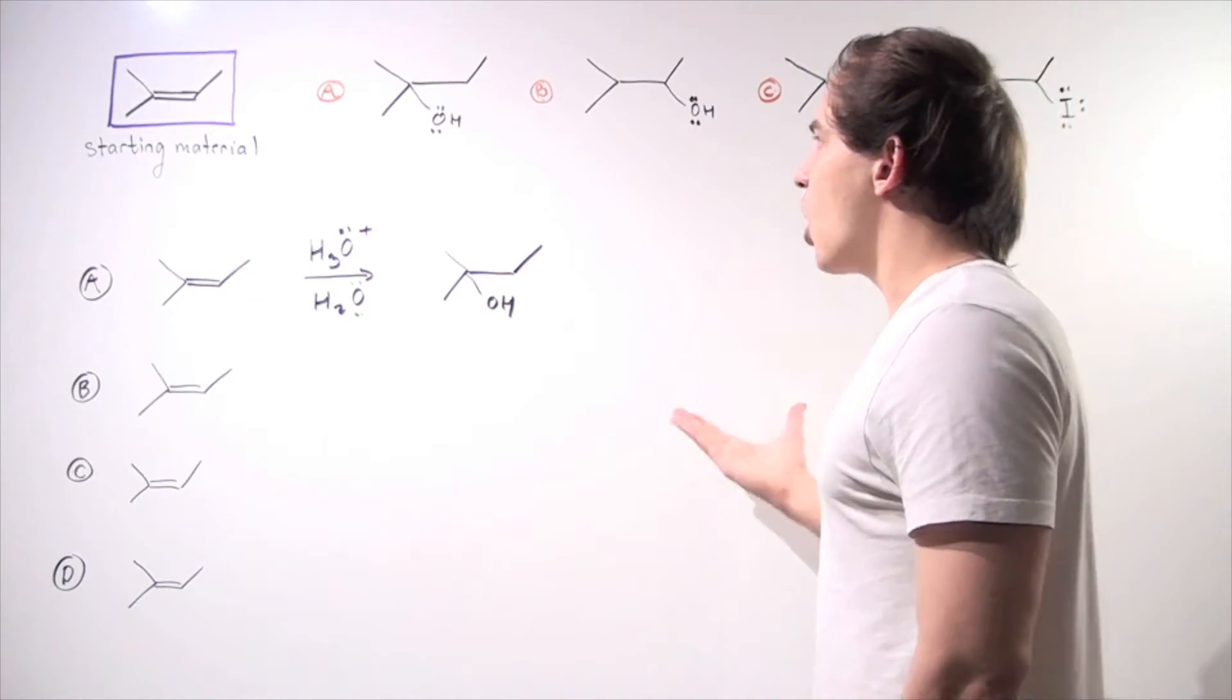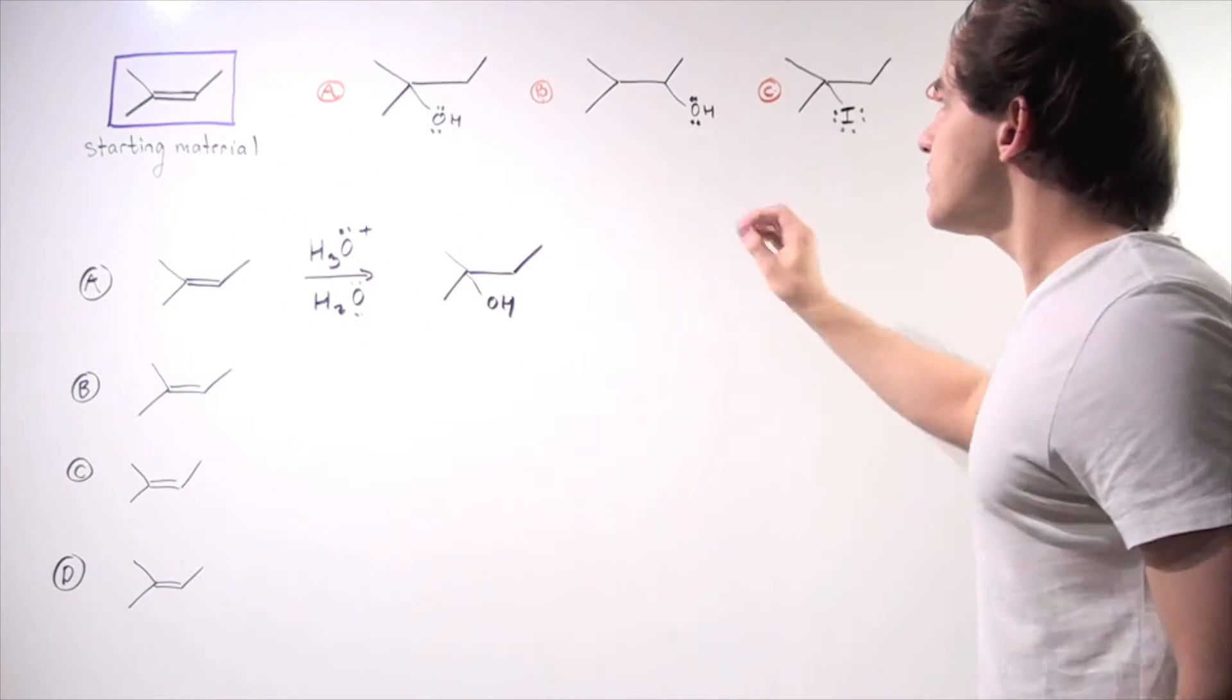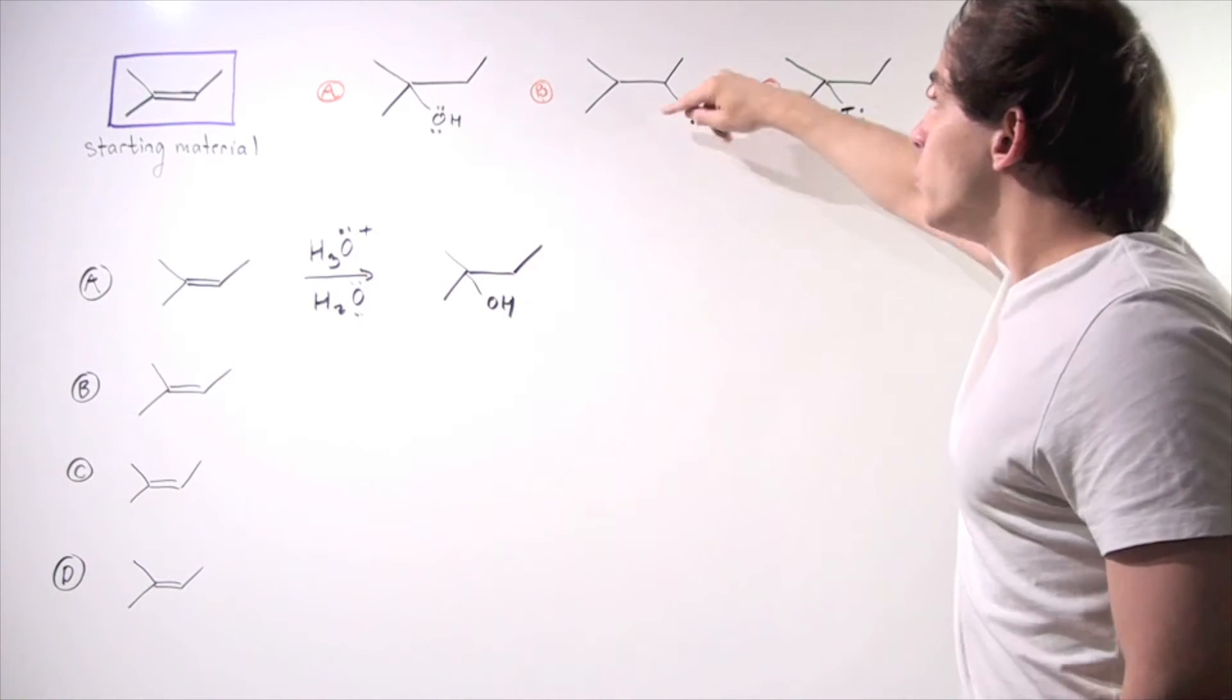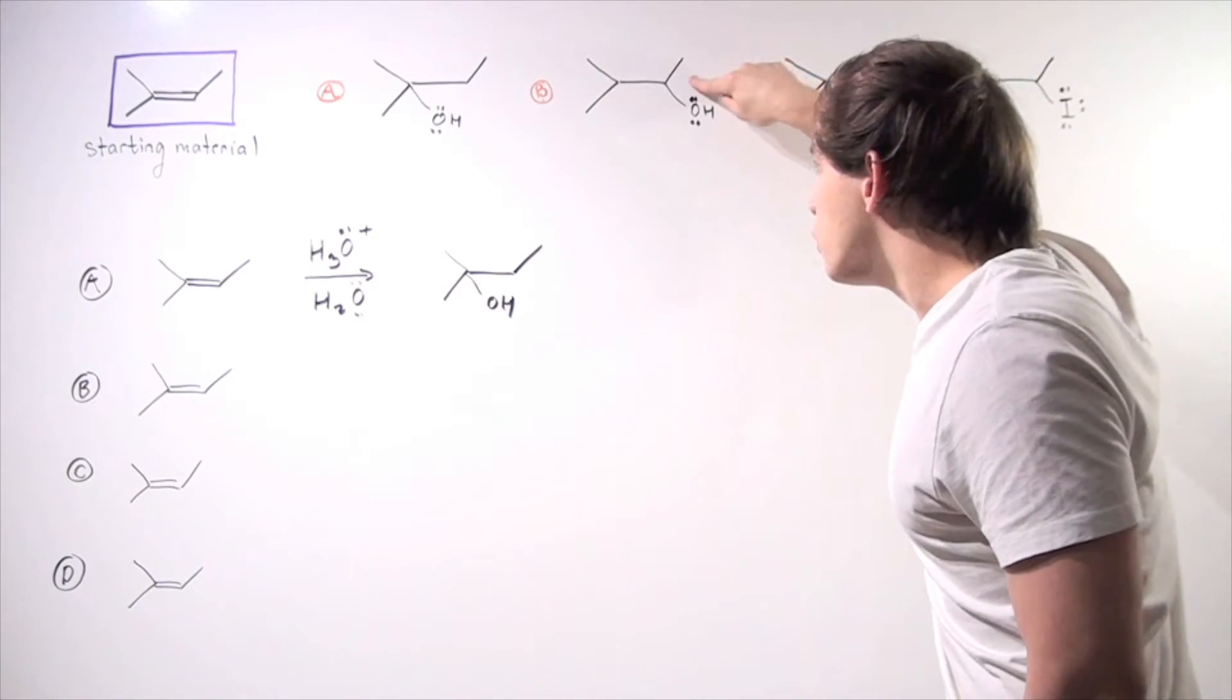So now we want to go from our starting material to product B. Notice this is also an alcohol, but now we don't have the more substituted alcohol, we have the less substituted.